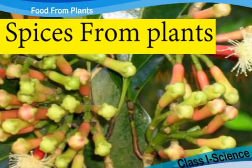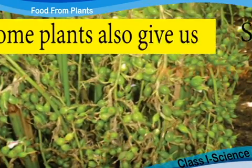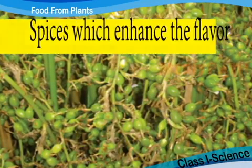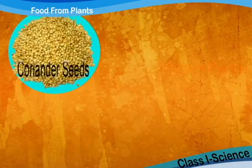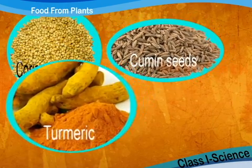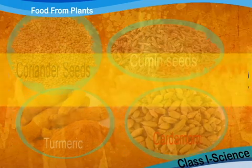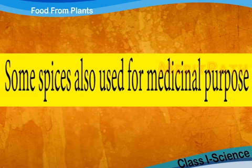Spices from plants. Some plants also give us spices which enhance the flavor of our food. Coriander seeds, cumin seeds, turmeric and cardamom. Some spices are also used for medicinal purposes.